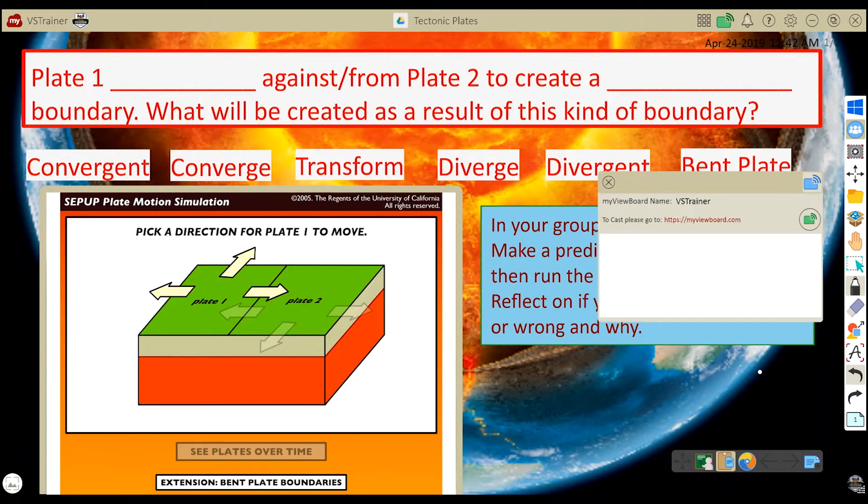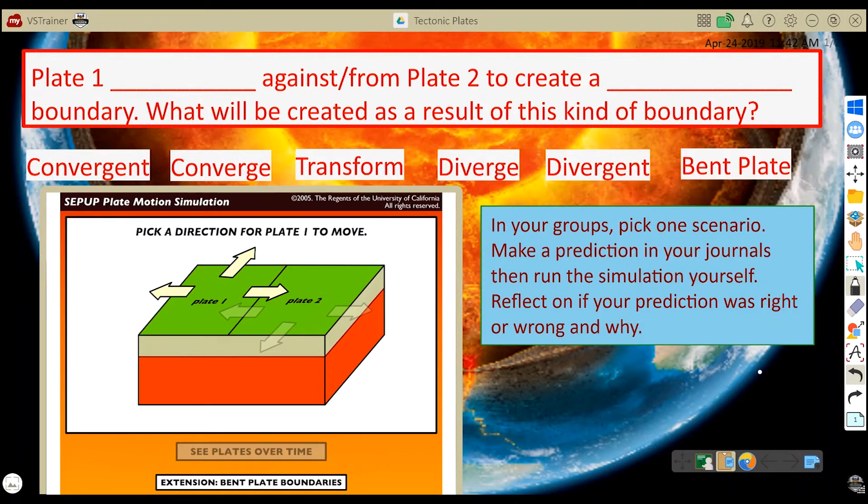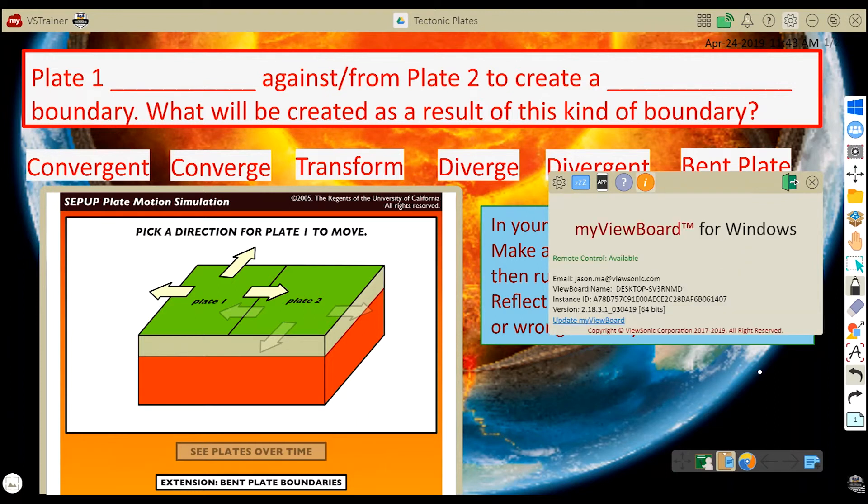Also it's important to check the settings, the little cogwheel on the top, and then touch the eye and make sure that it says remote control available. If remote control is unavailable, this feature will not work, which means it could potentially be a network issue or ports aren't set up correctly on your network.